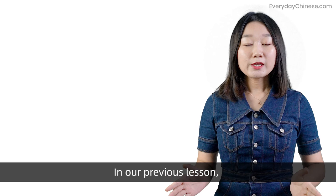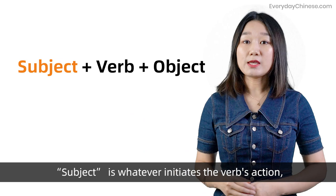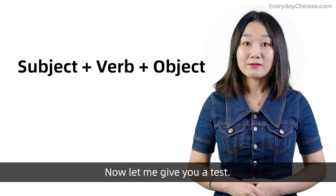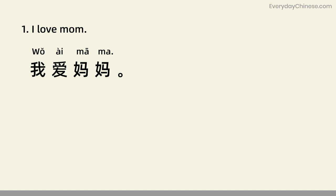In our previous lesson, we covered the basic word order: subject plus verb plus object. Subject is whatever initiates the verb's action, and object is whatever receives the action. Do you remember? Now let me give you a test. Number 1: I love mom. 我爱妈妈.